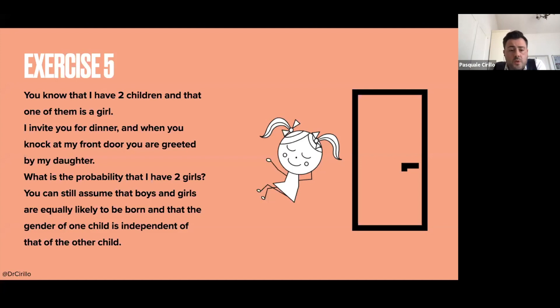Now the question is, what is the probability that I have two girls? Now the point is that for what concerns the assumptions about the probability of being a boy and a girl is exactly the same, and also the independence of the genders. So that part is the same. What really changes here is that you are not just told that I have a girl, that I have two children, and one is a girl, but you see the girl. So you see the girl in front of you because she's opening the door for you when you are coming at my place.